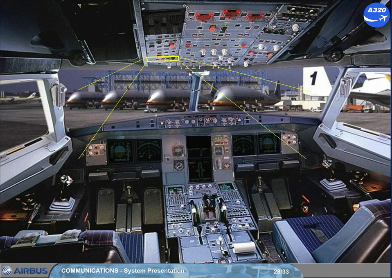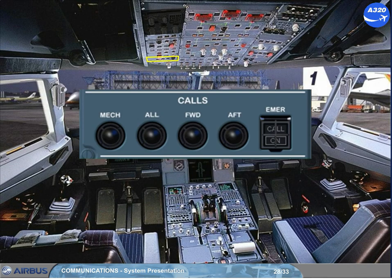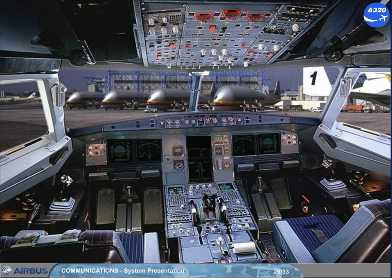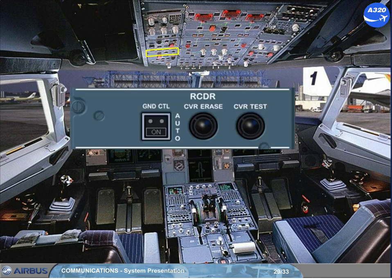The calls panel enables the cockpit crew to call a ground mechanic or the cabin crew. The cockpit voice recorder, CVR, is used to record all communications and oral warnings in the cockpit. Only the last two hours of the recording are retained. The CVR is controlled through the recorder panel.